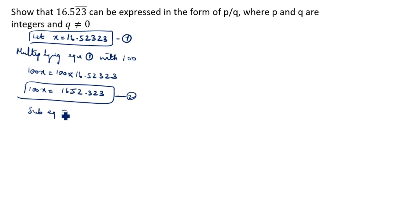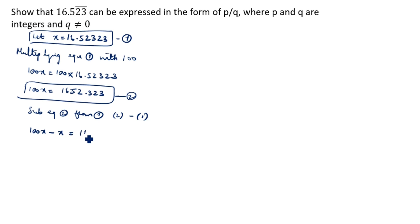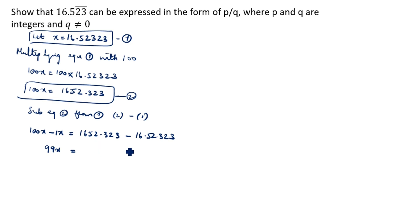Now subtract equation 1 from equation 2. So equation 2 minus equation 1: 100x minus x equals 1652.323... minus 16.52323... That gives 99x equals 1652.323... minus 16.52323...